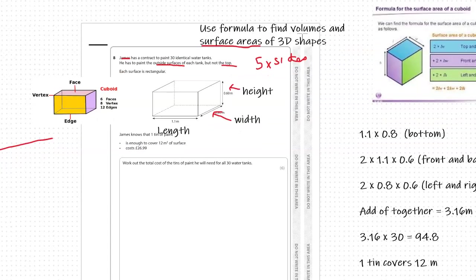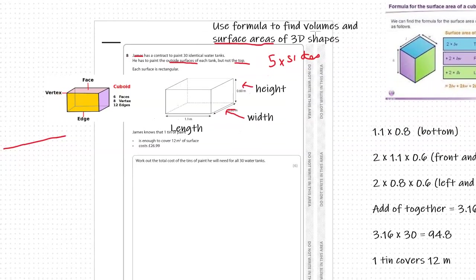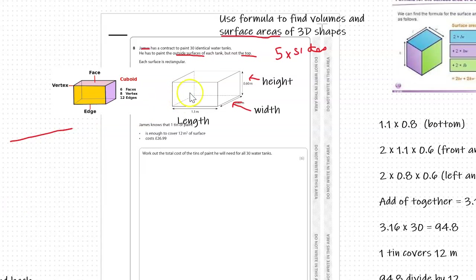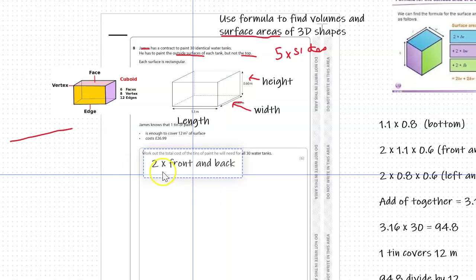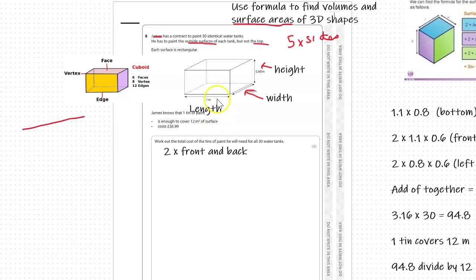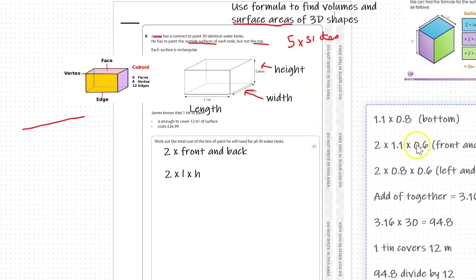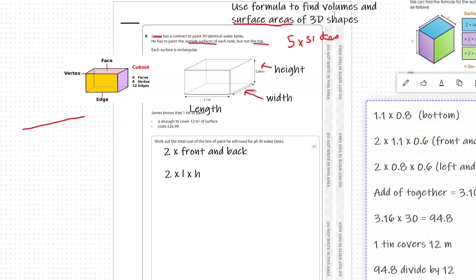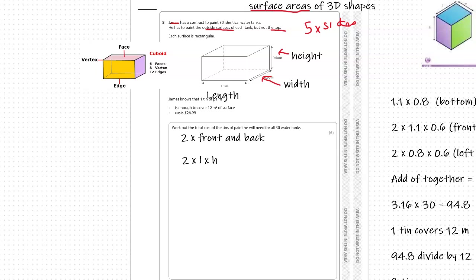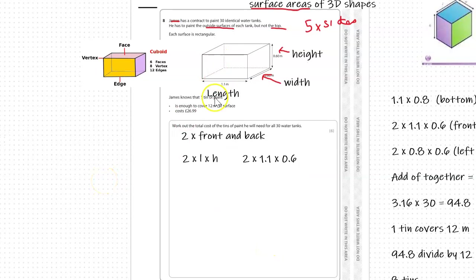Let's work it through. We know we have to have five sides. We've got front and back together, so those we need the length and the height. The back, because it's a rectangular cuboid, is exactly the same. So that would be 2 times length and height. The measurements associated with the length and height are 1.1 and 0.6 meters.